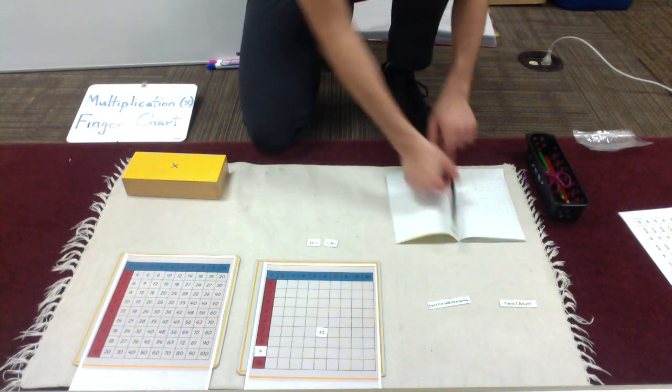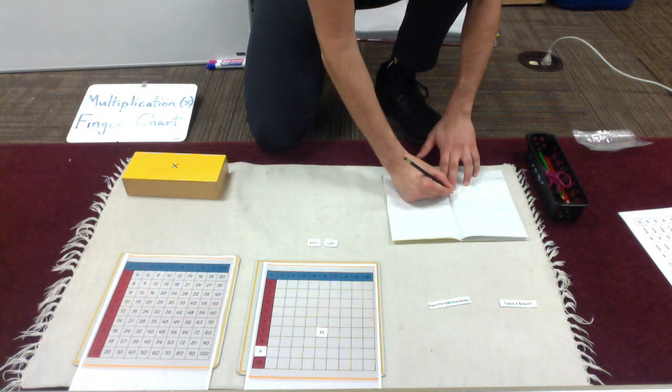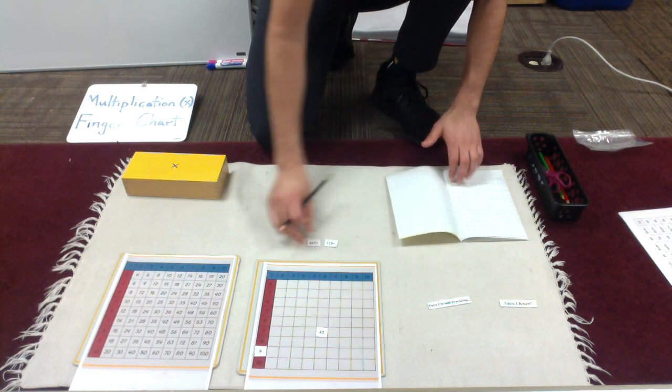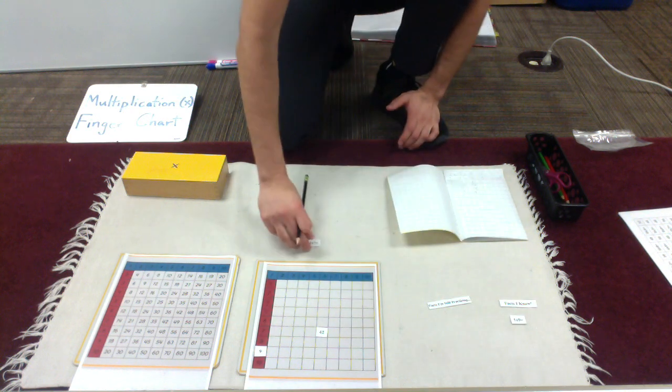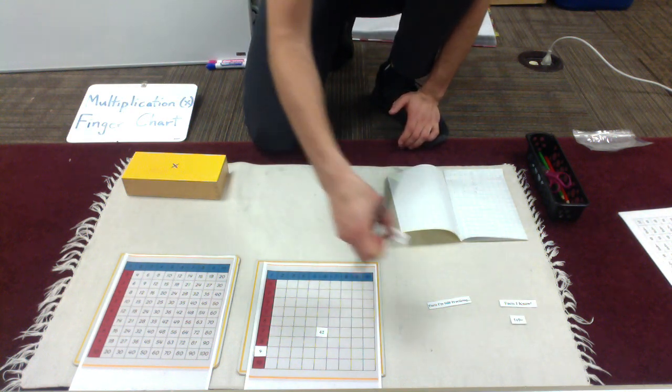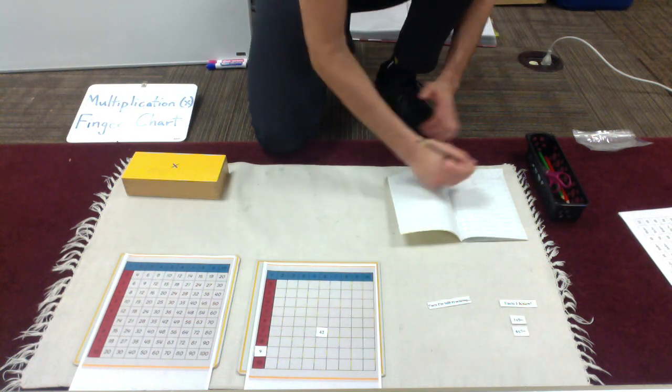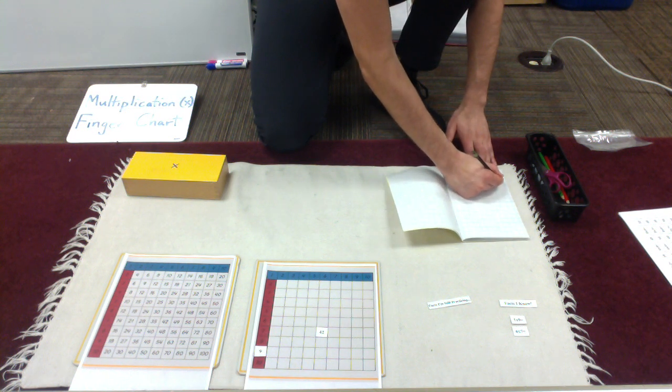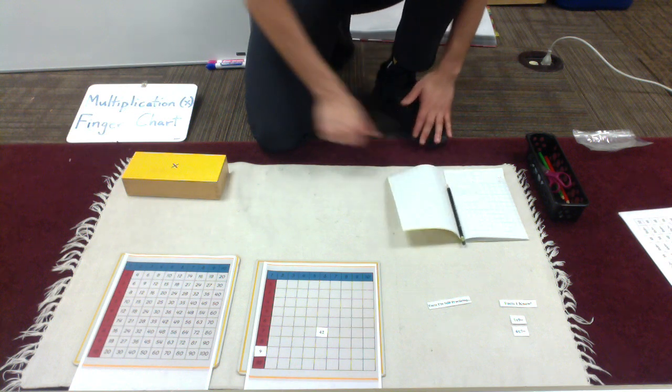And as I go, of course I'm going to record. And I knew 1 times 9 right away, so I'll put that in the facts I know column. And 6 times 7 is a fact I know because I always think about touchdowns, so I've learned those ones pretty quickly. But in case you didn't, you might put it in facts I'm still practicing.